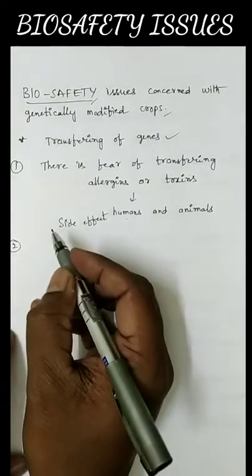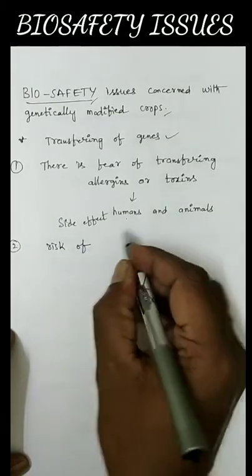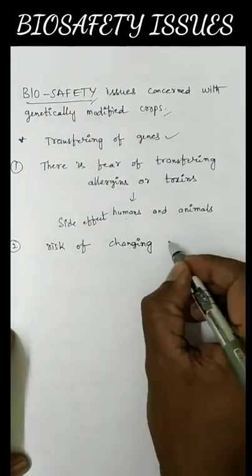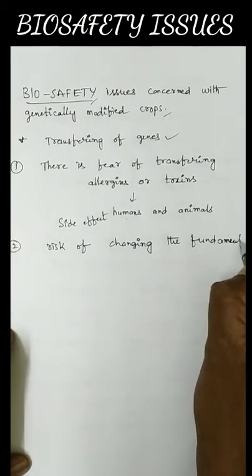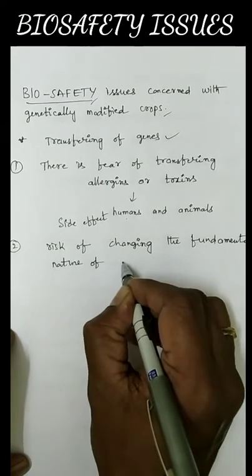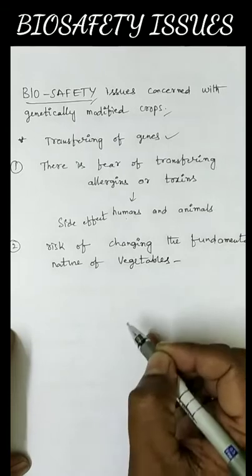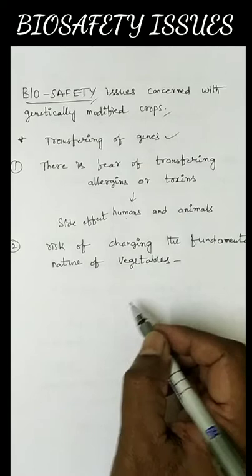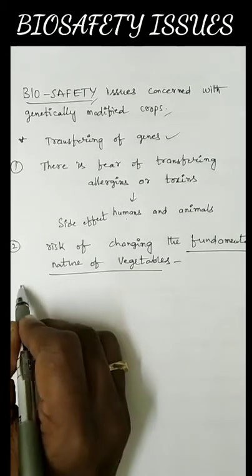The second issue is there is a risk of changing the fundamental nature of vegetables. While we are transferring genes, there is a risk of changing the fundamental nature of vegetables.